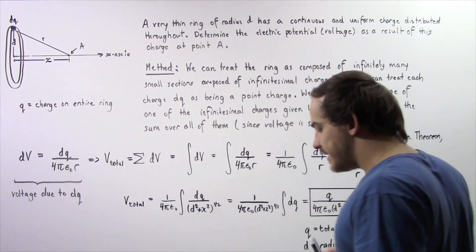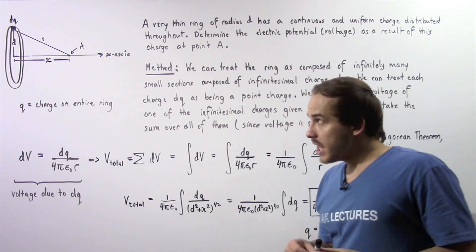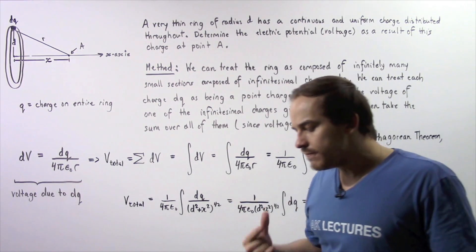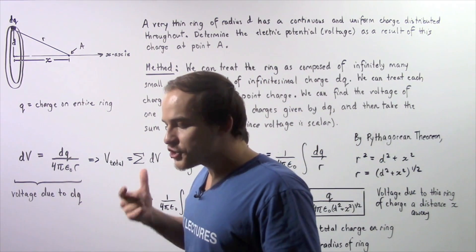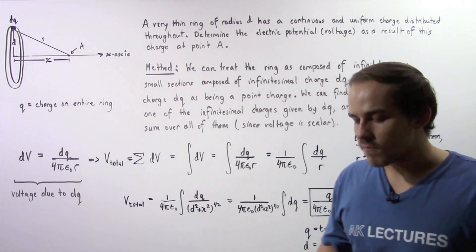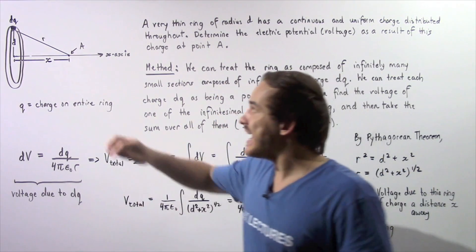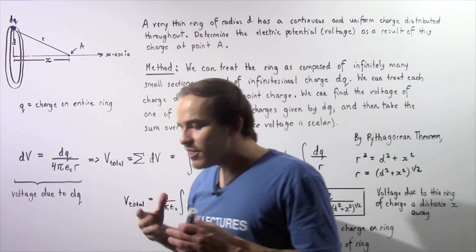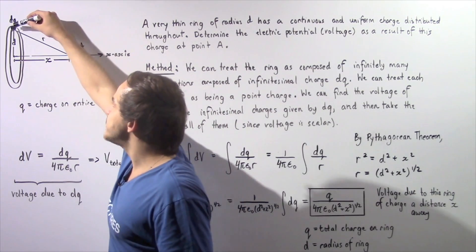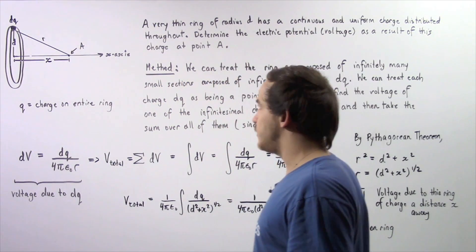We want to discuss the method we're going to use to solve this example. We take our ring and divide it into infinitely small sections, in which each small section has the same infinitely small quantity of charge given by dq. We then calculate at point A what the voltage is as a result of this infinitely small charge dq. Because voltage is a scalar, to find the total voltage at point A we simply take the sum over all these infinitely small sections of charge dq.